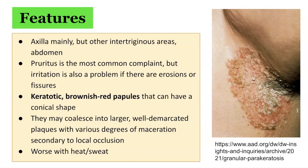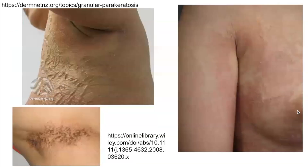The axillae are the most common sites of involvement, with both unilateral and bilateral lesions described. Additional intertriginous areas such as the groin and inframammary folds may also be affected. In the infantile form, bilateral plaques in the inguinal folds or erythematous geometric plaques underlying pressure points from the diaper can be seen. Further images demonstrating lesions in the axillae are shown here.